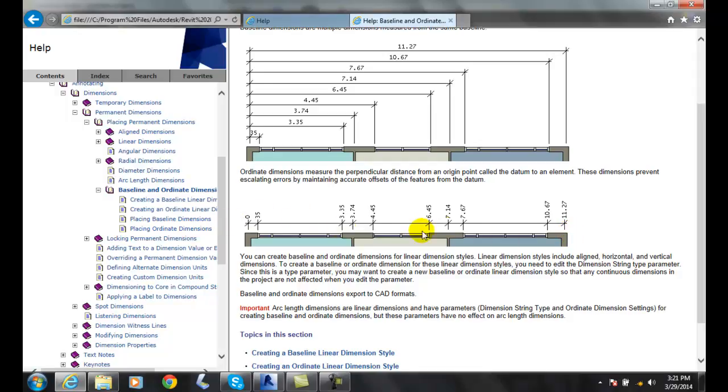Think of it as a big chain or a string, a dimension string. So we have two different ways of doing this. These are called baseline and ordinate dimensions.